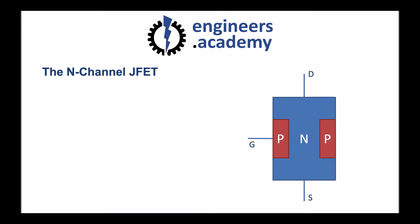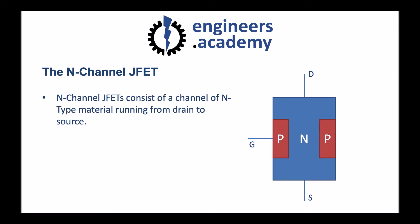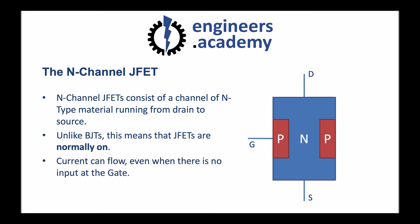Here's a diagram of the construction of an N-channel J-FET. You can see that it consists of P and N-type doped semiconductor silicon material. The N-channel J-FET is named as such because it consists of a channel of N-type material running from the drain to the source. What this means is that, unlike bipolar junction transistors, the J-FET is what we call normally on. It can conduct straight away because there's no reverse bias junction preventing current from the drain to the source. Current can flow by default, even when there is no input at the gate.